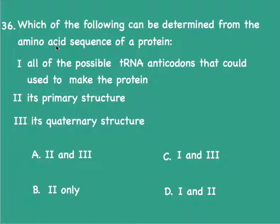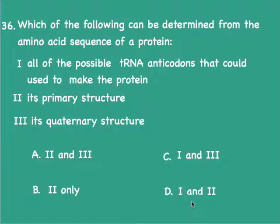Which of the following can be determined by the amino acid sequence of a protein? The amino acid sequence of a protein is its primary structure. By knowing the primary structure, it is possible to work out all possible tRNA anticodons that could be used to make that protein during translation, bearing in mind that a protein could be coded for by more than one tRNA anticodon. While it might be possible to work out the tertiary structure given the primary structure, it would be impossible to determine its quaternary structure, which involves the aggregation of several polypeptide chains. Therefore the answer is 1 and 2 only — choice D.